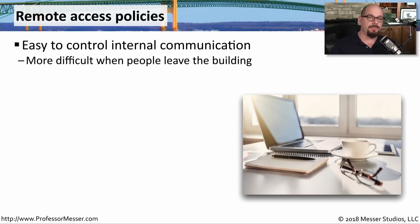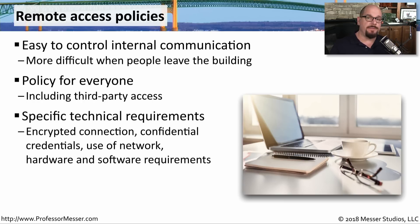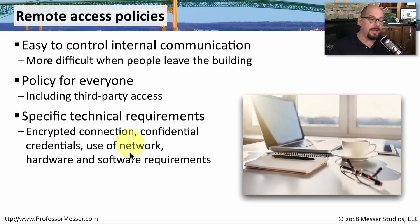When people are sitting at desks inside the building, it's relatively easy to control the flow of data. But not everybody is inside the building — many people will be working remotely. There need to be a series of policies that define how you manage data and communication when people are outside the building, and this also applies to third parties connecting via VPN to gain access to resources inside your network. These policies usually have very specific technical requirements, such as requiring an encrypted connection, specifying the type of encryption, the credentials needed to log in, and exactly how the network, hardware, and software should be used over remote communication.